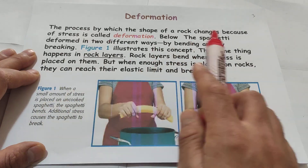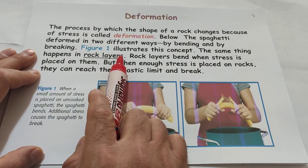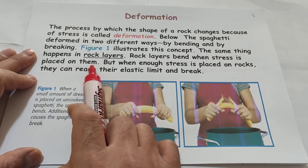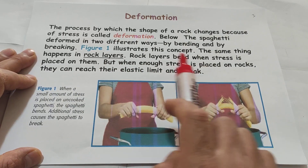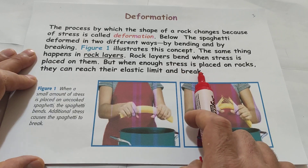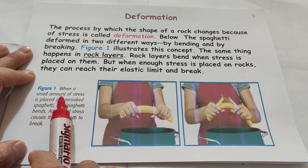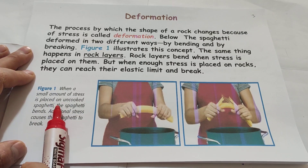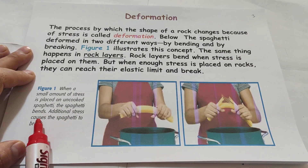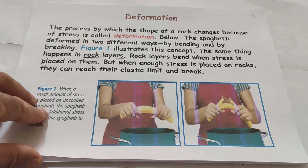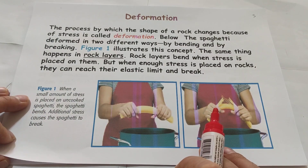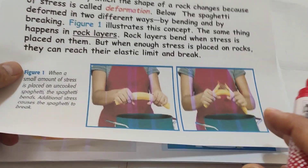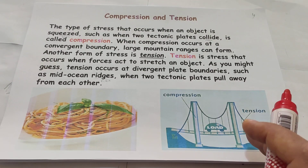Illustrate this concept. The same thing happens in a rock layer — rock layer meaning the crust layer of earth. Rock layers bend when stress is placed on them, but if not enough stress is placed on rocks, they can reach their elastic limit and break. When a small amount of stress is placed on uncooked spaghetti, the spaghetti bends; additional stress causes the spaghetti to break. When the earth applies enough force, the crust layer breaks. When it does not apply enough force, it is going to be bent into a different shape.